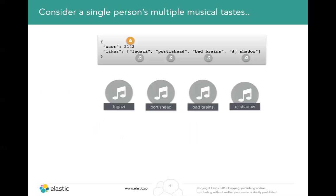Let's take an example looking at music. We have a JSON document which represents a user, and we've got an array of the various different artists that user happens to like — a fairly diverse set of bands. We've only drawn out four here as an example, but a typical user will have tens, dozens of bands in their list.